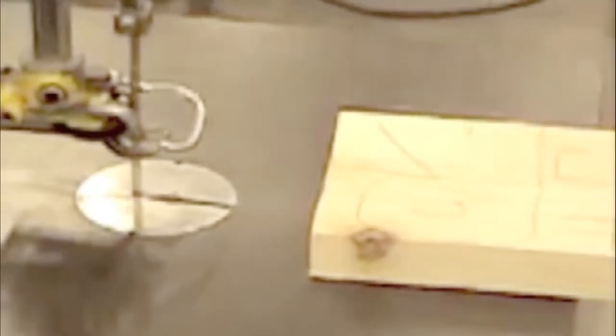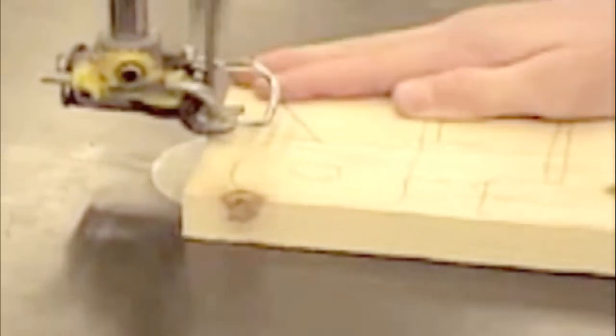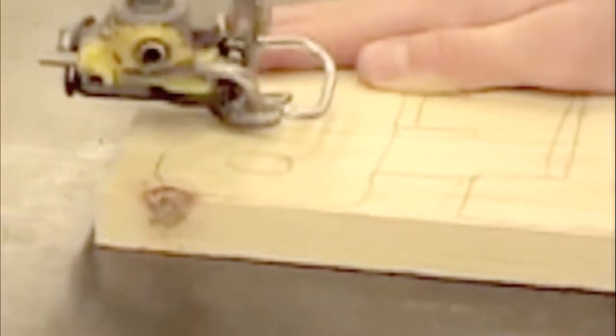And then to do the curved lines in your irregular shapes you're going to have to do relief cuts first. So do a short cut in and out like that. Do another short cut in and out every three or four inches.